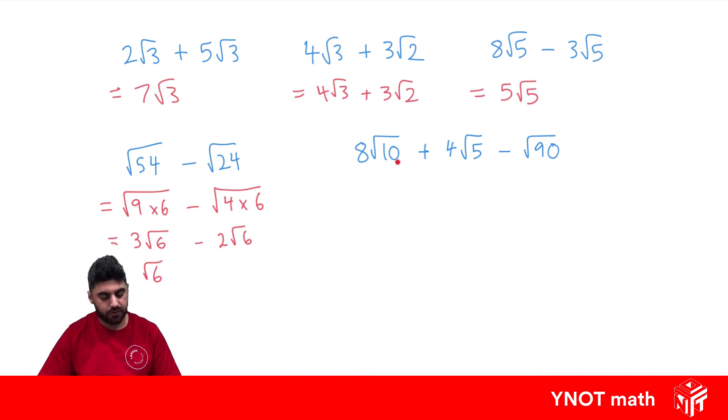Root 10 can't be simplified because there's no factors which are perfect squares. Same with 5. But we can simplify root 90, so let's do that.